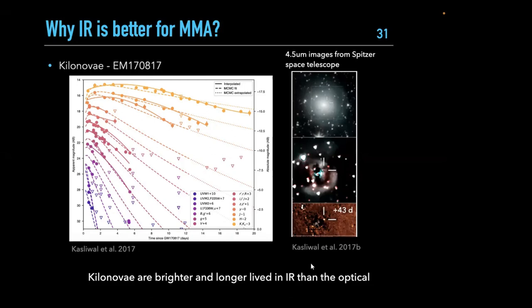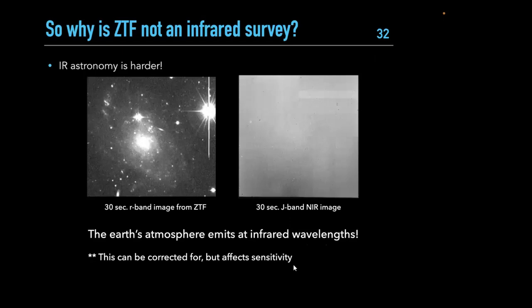Kilonovae are brighter and longer-lived in the infrared than the optical, yet most kilonova searches focus on optical wavelengths. Why can't we just build a ZTF in the infrared? The problem is that infrared astronomy is difficult. A typical 30-second ZTF image shows galaxies and stars clearly, but a 30-second infrared image of the same region shows essentially nothing — just a hazy background filling the entire frame.